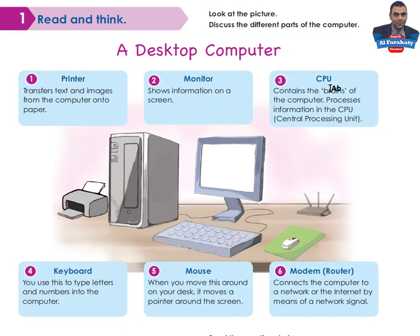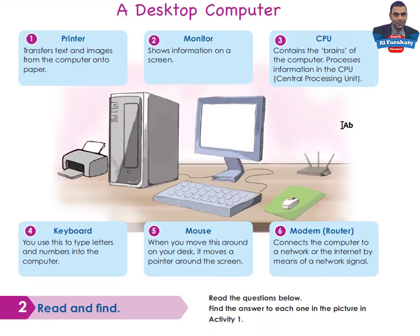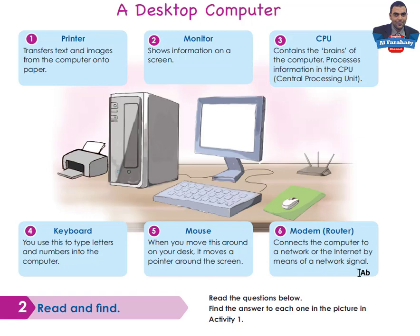Three: CPU, Central Processing Unit — the CPU contains the brains of the computer and processes information. Four: Keyboard — you use this to type letters and numbers into the computer. Five: Mouse — when you move this around on your desk, it moves a pointer around the screen. Six: Modem — the modem connects the computer to a network or the internet by means of a network signal.